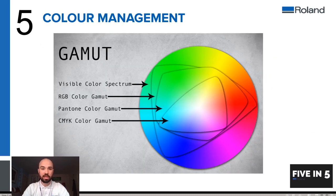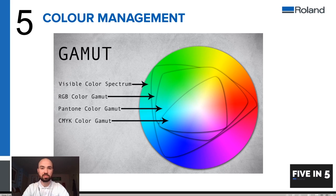When we talk about color gamut, these different devices have different gamuts. As you can see in this diagram here, the RGB color gamut is much larger than the CMYK color gamut. This means that if we were going to print an RGB color, it would need to be converted before being printed on a CMYK device. This is one of the reasons that we have color management, and color management is normally built in to your software that runs your device.